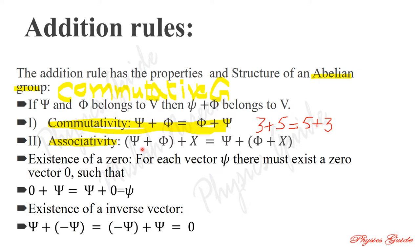These properties — associativity, commutativity, existence of zero, and existence of inverse — are the addition rule properties. We can prove commutativity: if you take two vectors and add them, you get the same answer regardless of order.